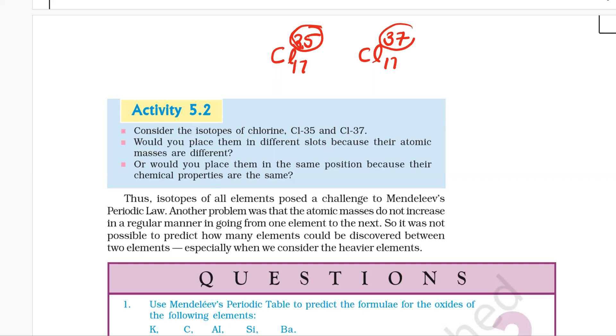So what should be the position of the element chlorine? Since isotopes have the same atomic number but different atomic mass, there was basically a controversy about where to place these elements, as they are placed on the basis of atomic mass.